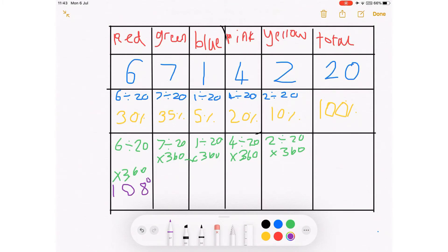I hope you tried because it's quite easy. The first one is 108 degrees, for the next one it's 126 degrees, and then 18 degrees, and then 72 degrees, and then 36 degrees.